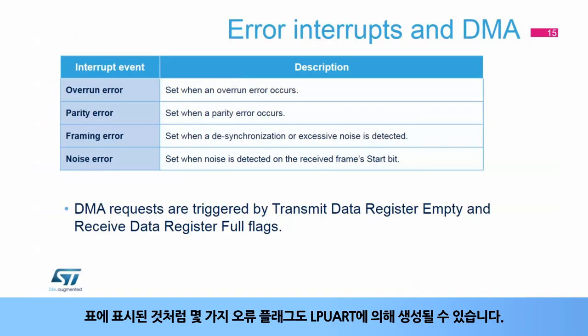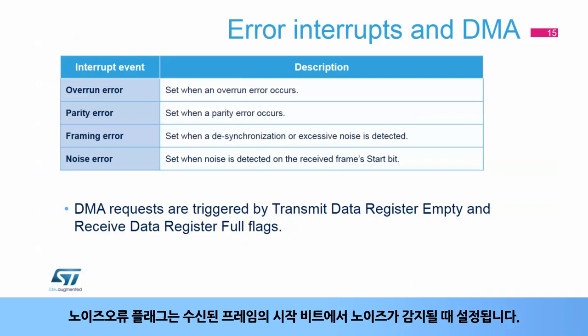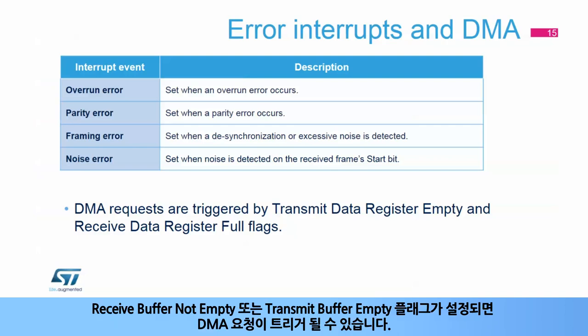Several error flags can also be generated by the LPUART as shown in the table. The overrun, parity, and framing error flags are each set when the corresponding error occurs. The noise error flag is set when noise is detected on the received frame's start bit. DMA requests can be triggered when the receive buffer not empty or transmit buffer empty flags are set.